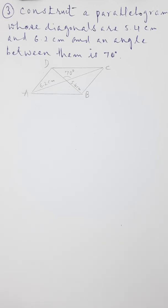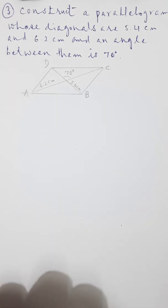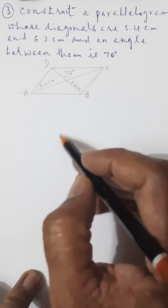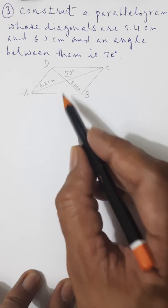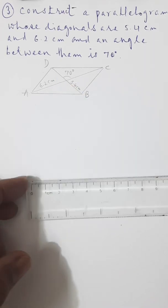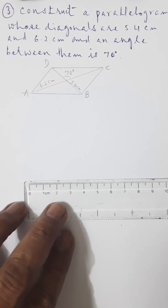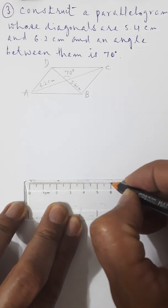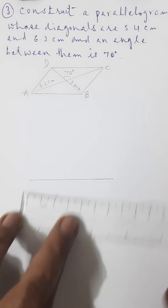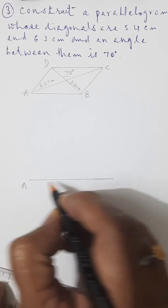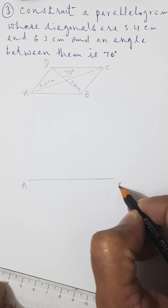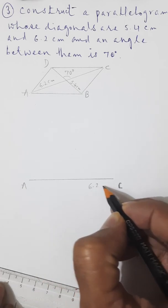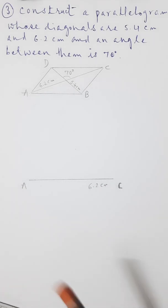As per the property of this parallelogram, diagonals bisect each other. It means one diagonal of 6.2 and the other of 5.4 bisect each other. First of all, draw one line of 6.2 centimeters. This is point A and this is point C, so AC is 6.2 centimeters.